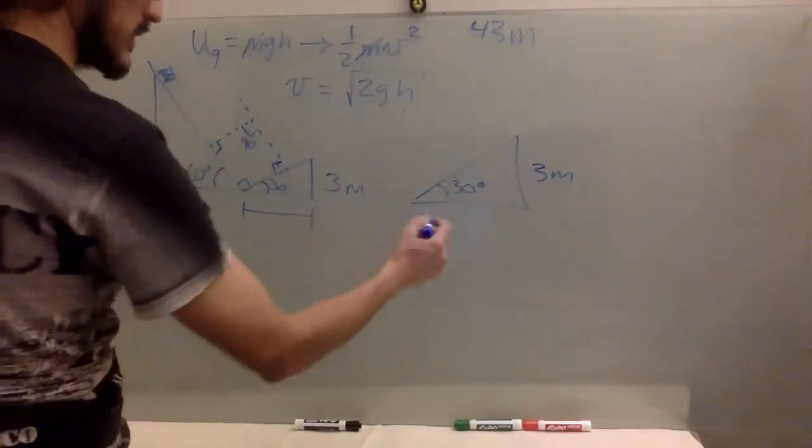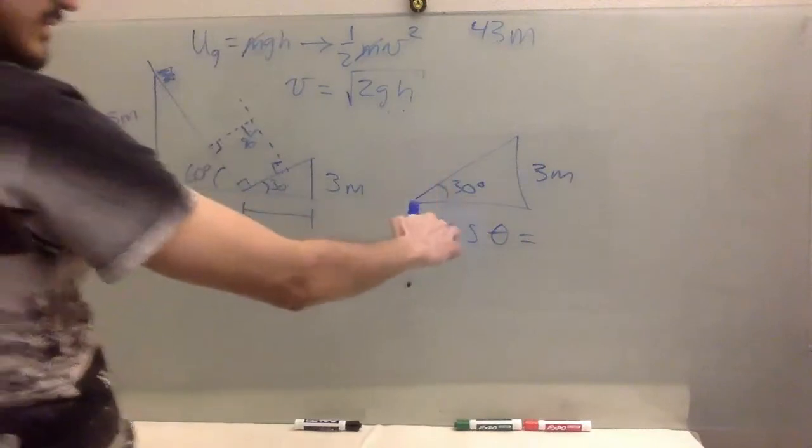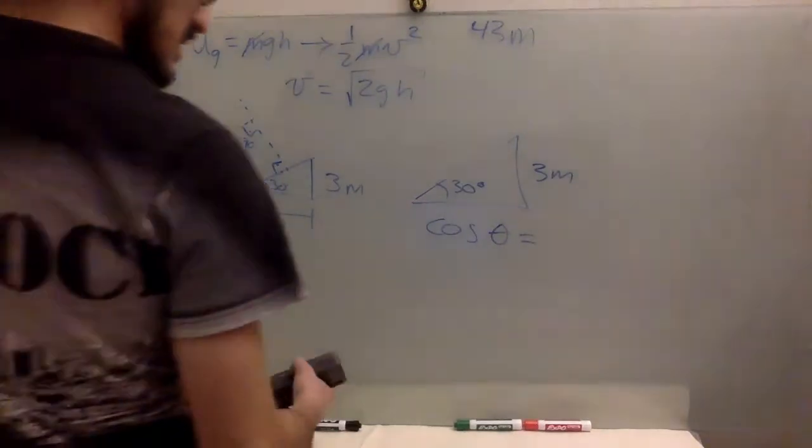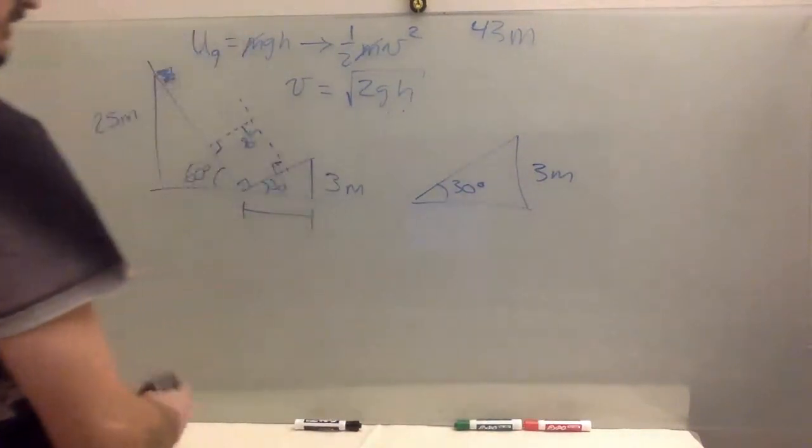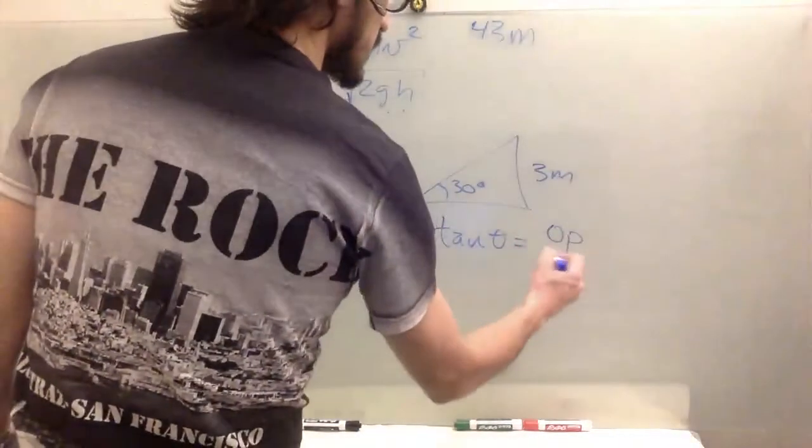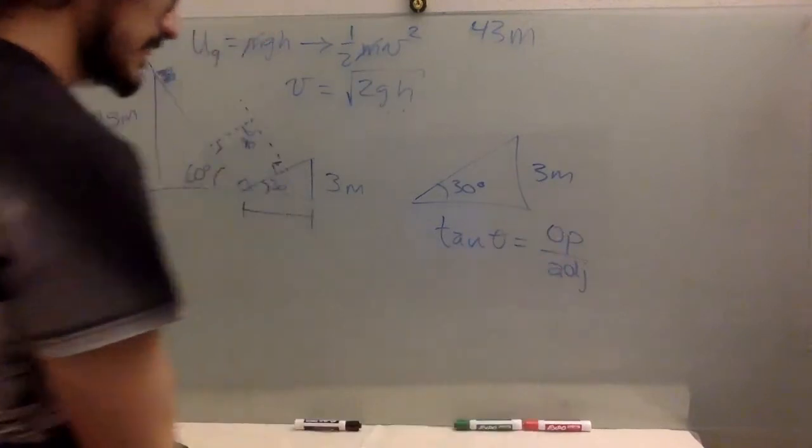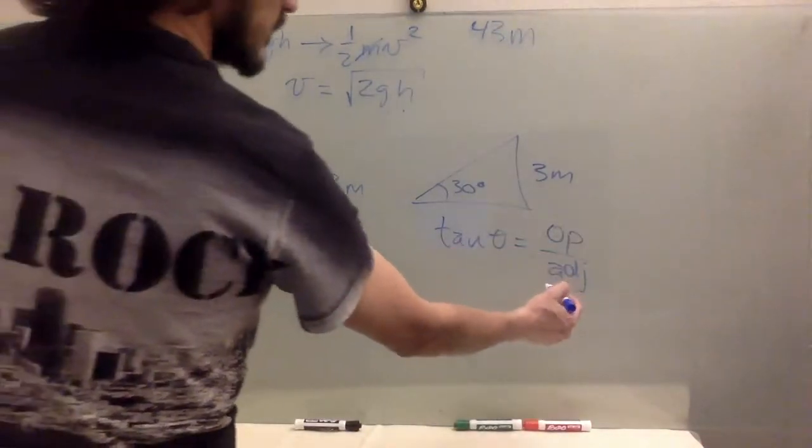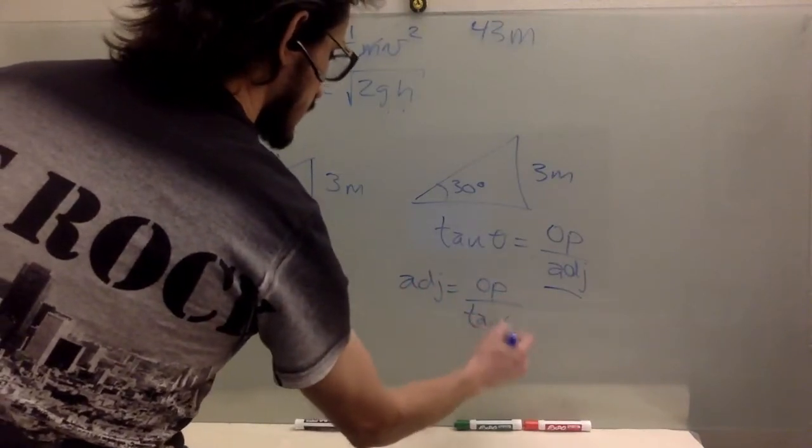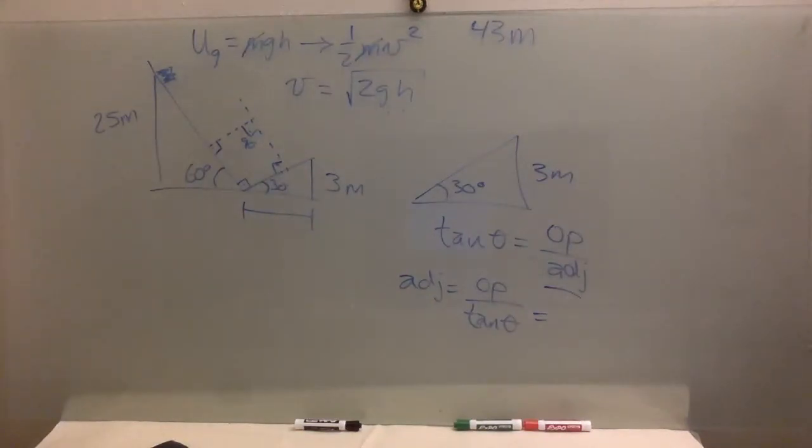And you can use the cosine function, right? So cosine theta is, actually, nevermind. You don't want the cosine, you want the tangent. So tangent of theta is opposite over adjacent. So opposite is three meters. Adjacent is what we want. So adjacent is opposite over tangent of theta. In this case, 30 degrees. Let's see if we can get the tangent of 30 without calculator.